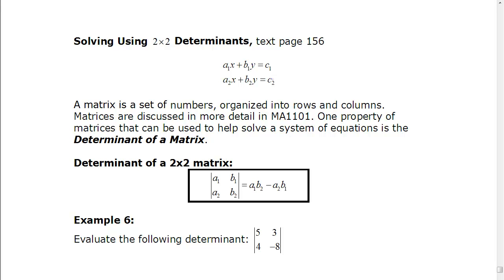A determinant is actually a property of a matrix. We don't really get into matrices here, as those are a topic in 1101. All we need to know is a determinant. A determinant looks like this — these two lines mean determinant, or find the determinant of the numbers contained in it. The numbers are arranged in rows and columns: the first column has the coefficients of the x variables, and the second column has the coefficients of the y variables. So we have a1, a2, b1, b2. To find the determinant, we multiply a1 and b2, then subtract the other two multiplied together. So we multiply on the diagonal and subtract them.